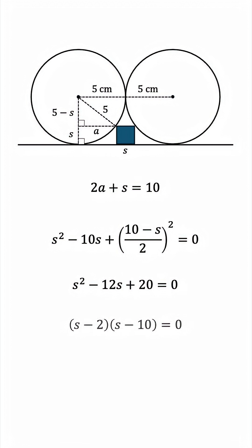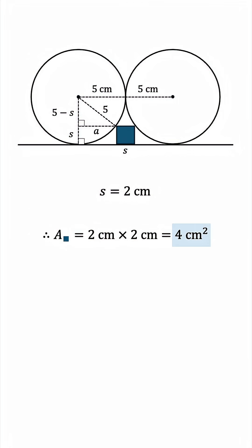Let's factorize this equation, and this gives us S equals 2 or S equals 10. 10 is physically irrelevant, it's an extraneous solution introduced by the squaring, so the answer must be 2. The square therefore has a side length of 2 centimeters, and its area must be 4 square centimeters.